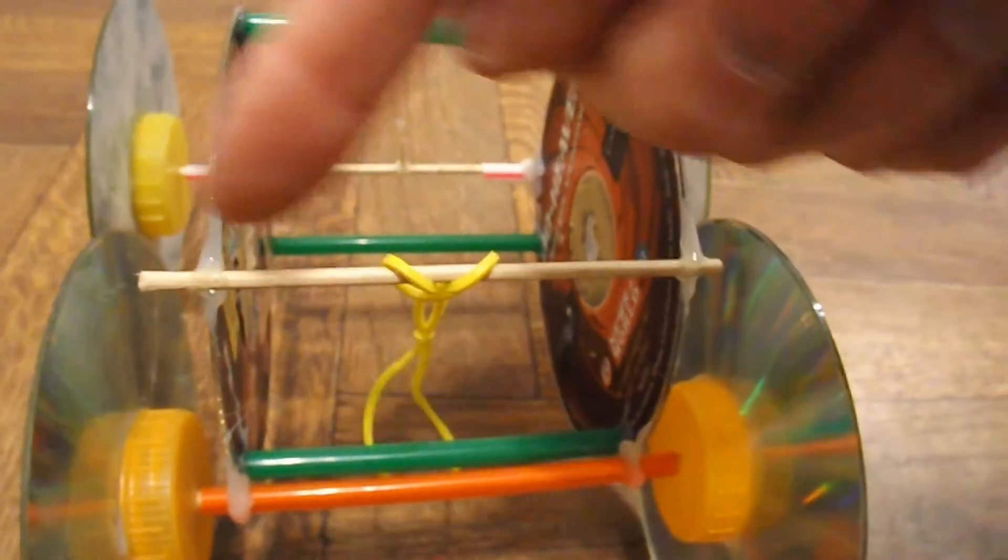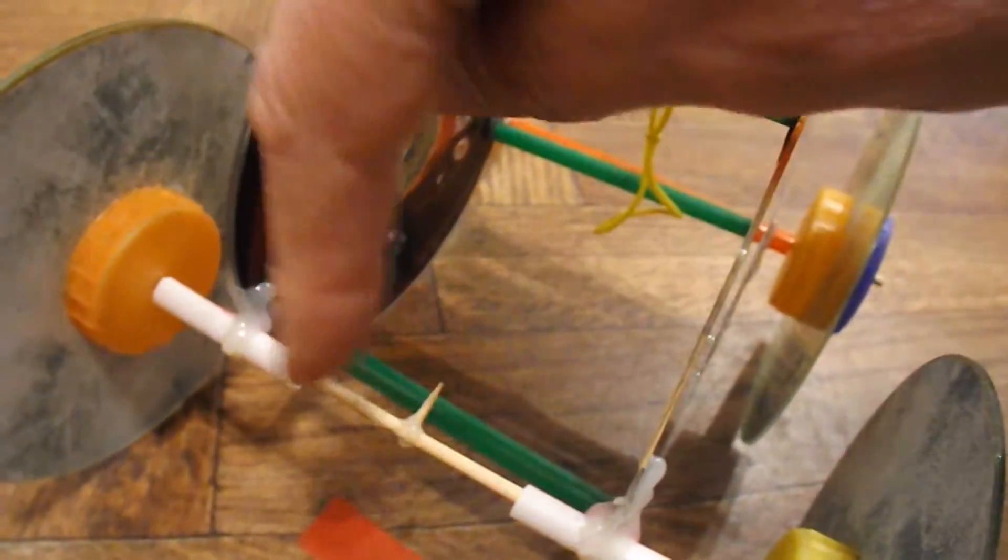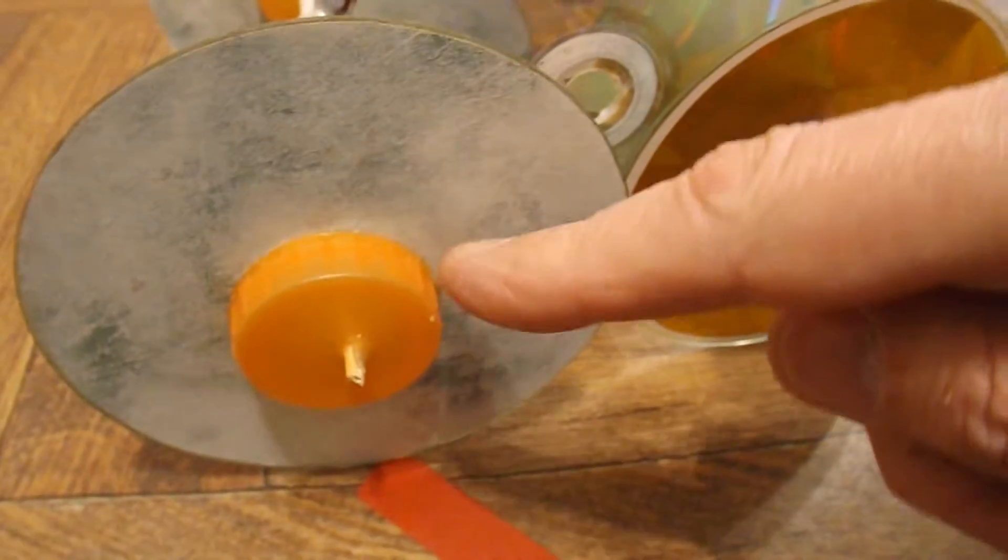Barbecue skewer across the front there to give us something to tie the rubber band to. Barbecue skewers for the axles. Front and back. And milk bottle tops for the hubs.